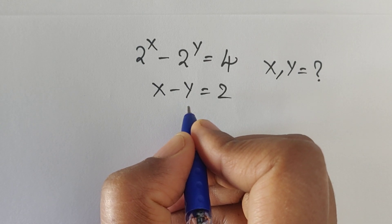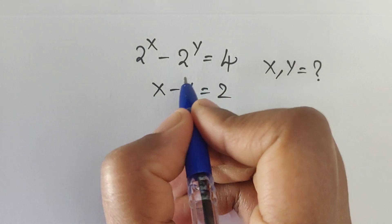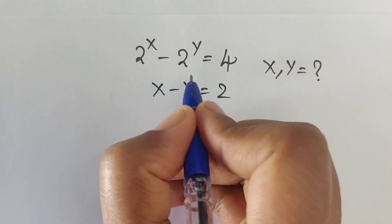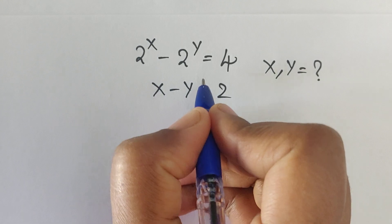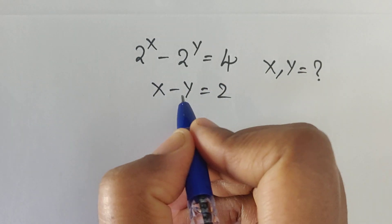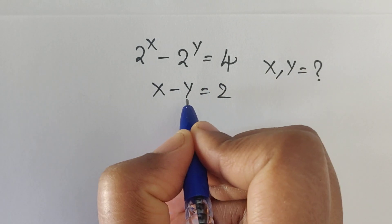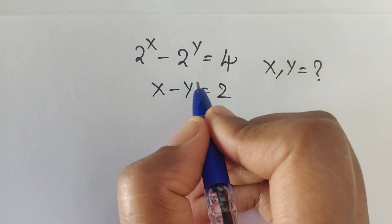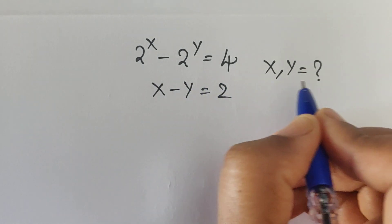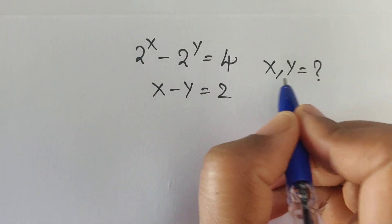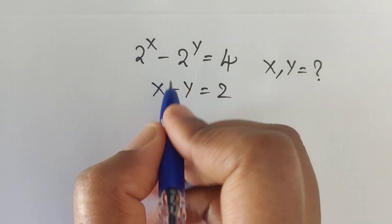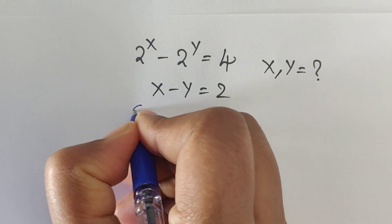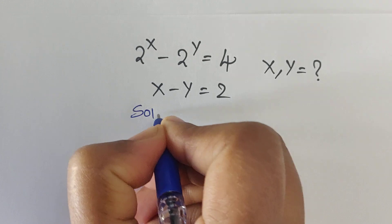Hello everyone, welcome back to our channel. Here we have one problem: 2 power x minus 2 power y equals 4, and x minus y equals 2. In this problem we have to find the values of x and y. So how do we solve this problem? Let's see.